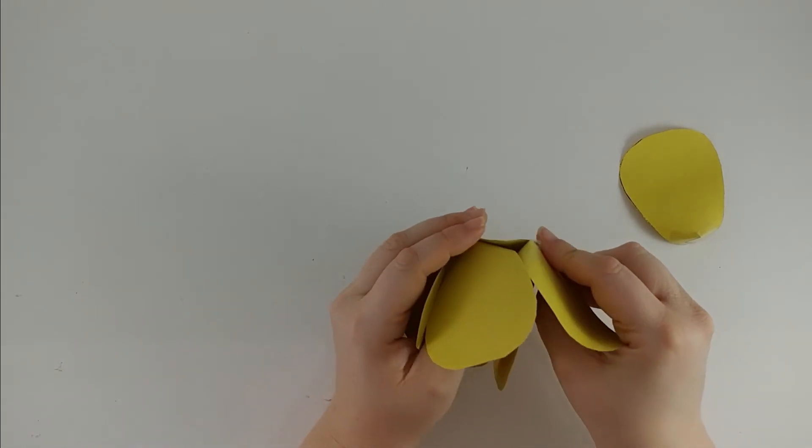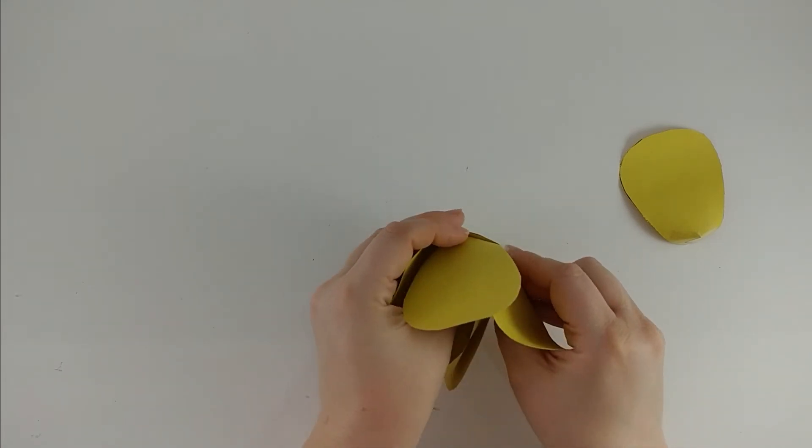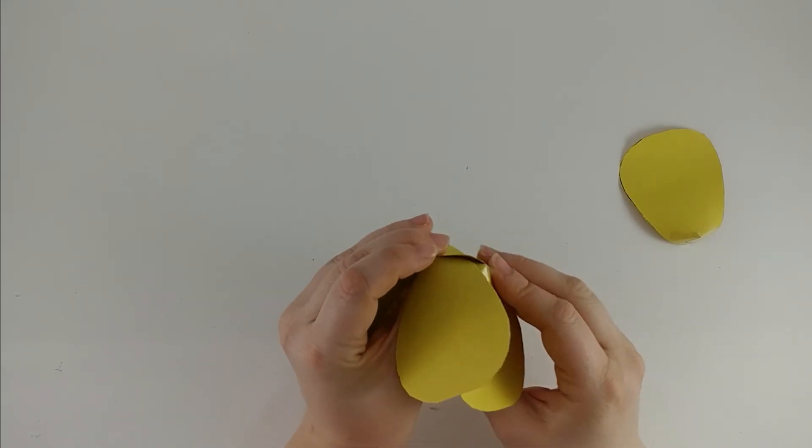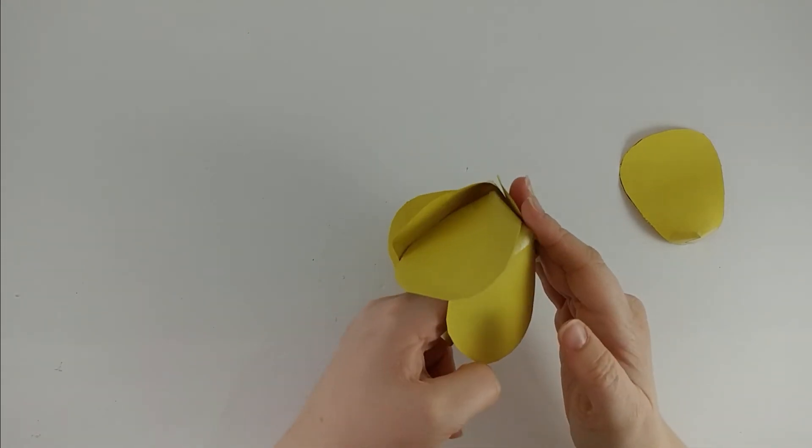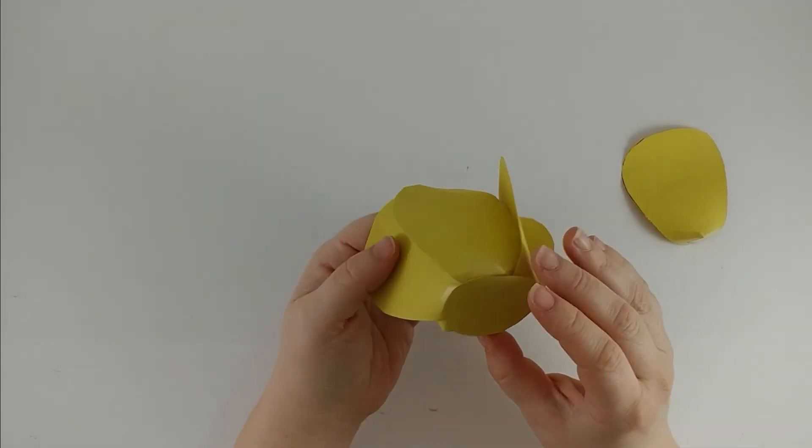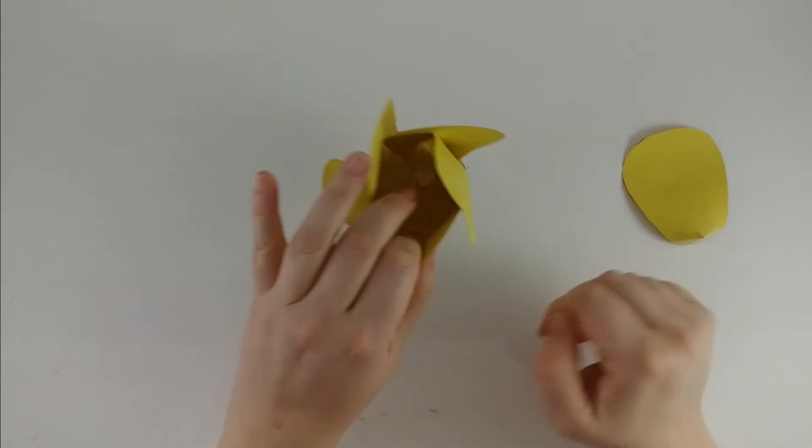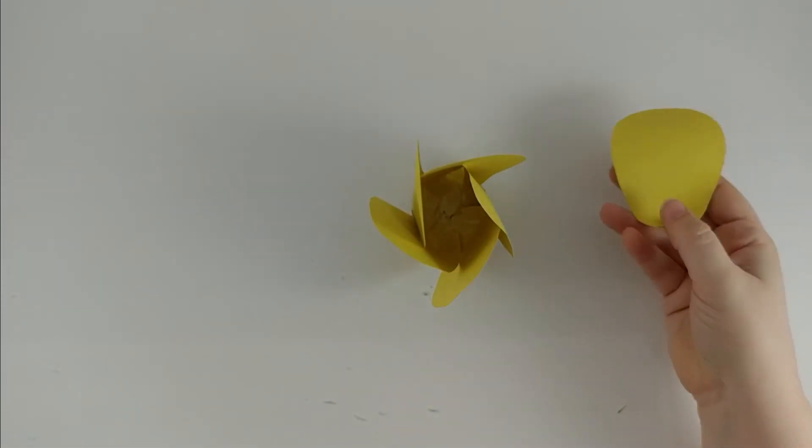Scotch tape is a fairly maneuverable product when you're dealing with the construction paper. This one's a little bit out but I can make it work. And again, I have five petals, not six, I'm not going to worry about it.